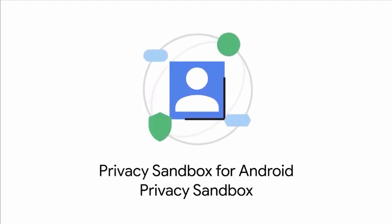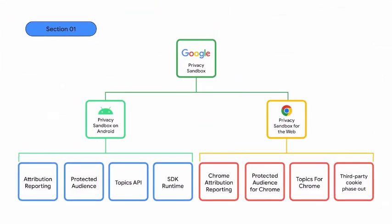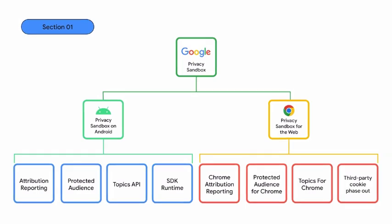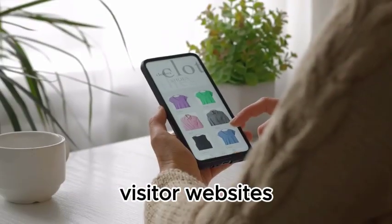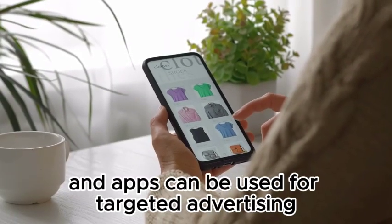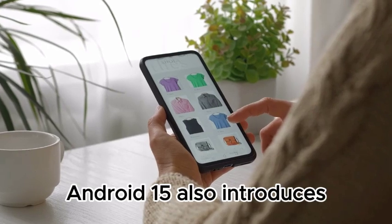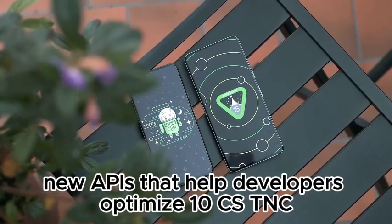Android 15 features an updated version of the Privacy Sandbox initiative. User data from websites and apps can be used for targeted advertising. Android 15 also introduces new APIs that help developers optimize.